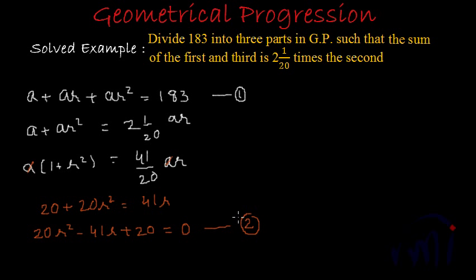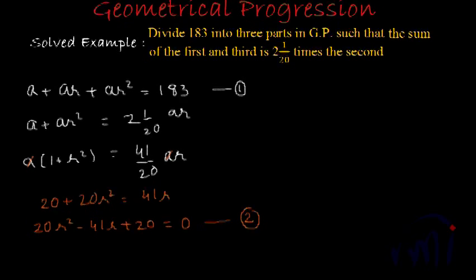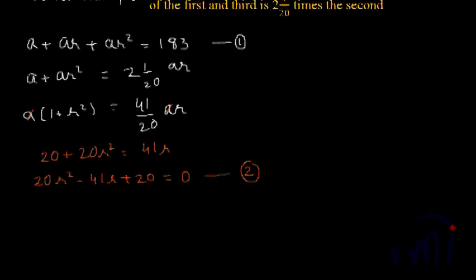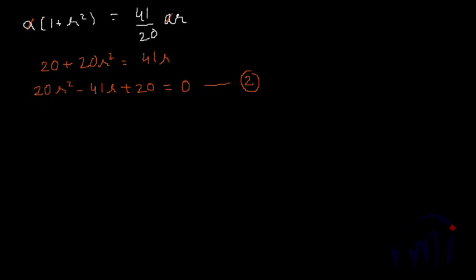Rearranging, we get 20r² - 41r + 20 = 0. This is equation number 2, and it is a quadratic equation. To factorize it, we first find the product of the coefficient of r² and the constant term: 20 × 20 = 400.